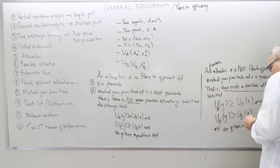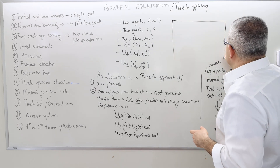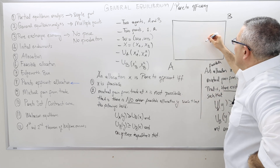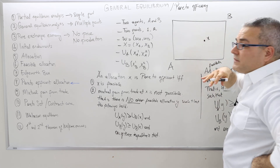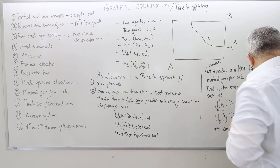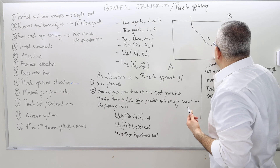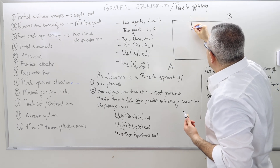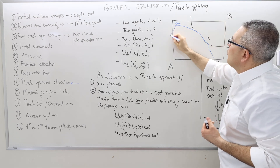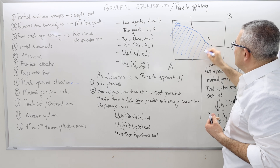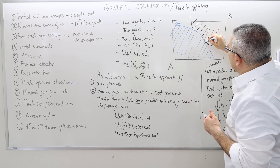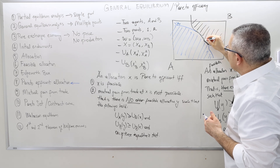Let's do some exercises. I have an Edgeworth box — this is where agent A is, agent B is. I'm going to pick a point, and let's suppose the indifference curves are such that this is U_A, the indifference curve for agent A, and this is U_B. They're tangent to each other at infinitely many points. All these points are in the better-than set for agent B, and all these points are in the better-than set for agent A. Agent A and B are indifferent to x.